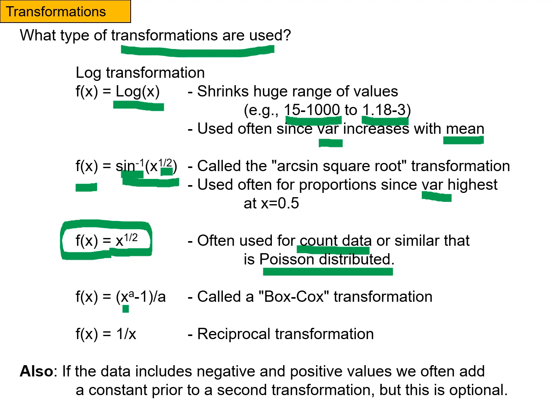This transformation here, where you're taking x, raising it to a power a minus 1 divided by a, it's kind of a totally unintuitive transformation, but it's commonly used. This is a Box-Cox transformation and used a lot in public health. And then finally, a reciprocal transformation is sometimes used as well.